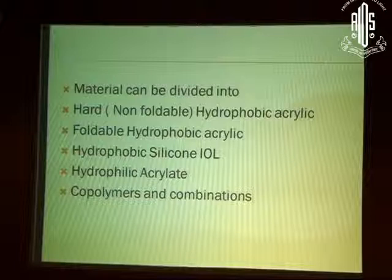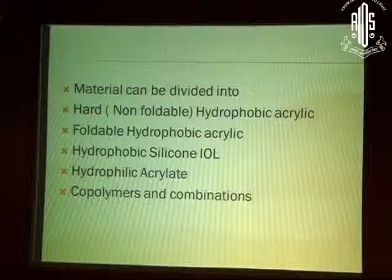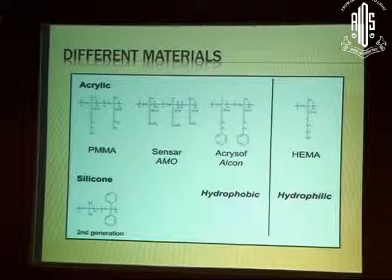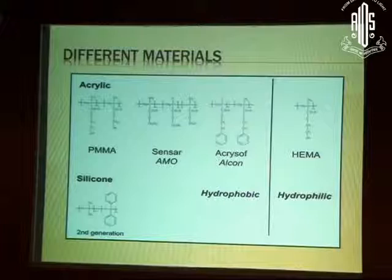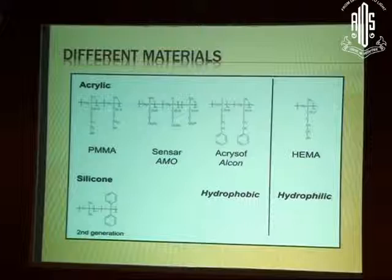We have now started getting combination materials; for example, the Zeiss lens is made of silicone and has a coating of hydrophobic acrylate on top. There are various materials. We won't go into the chemical analysis, but basically there are a lot of similarities in the lenses. Sensa essentially utilizes DEGMA material, which is a softener onto PMMA. The loop structures are fairly similar to each other, and a lot of these lenses borrow from one another to make a new material.